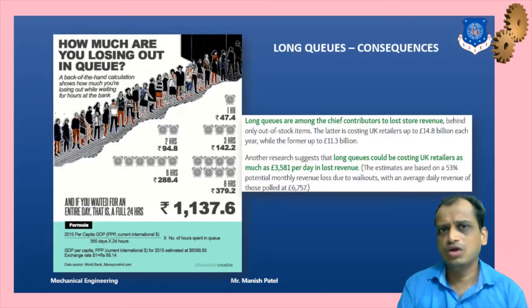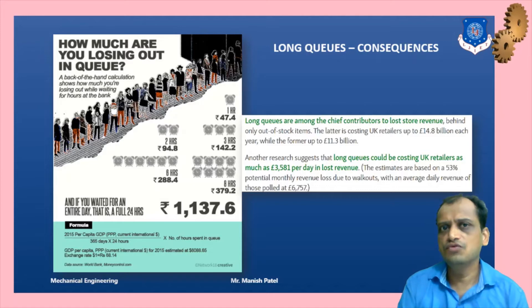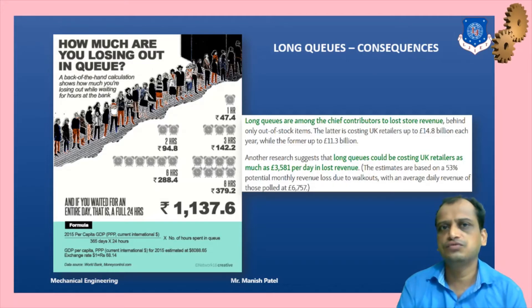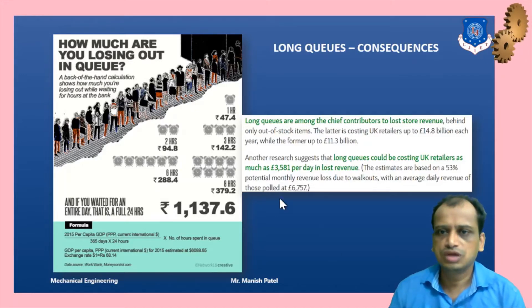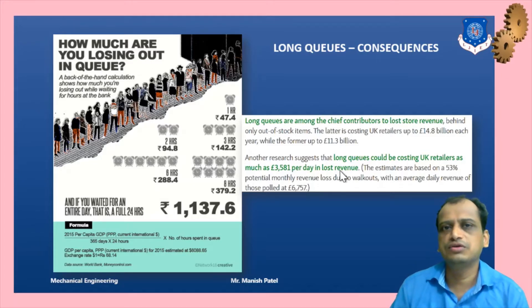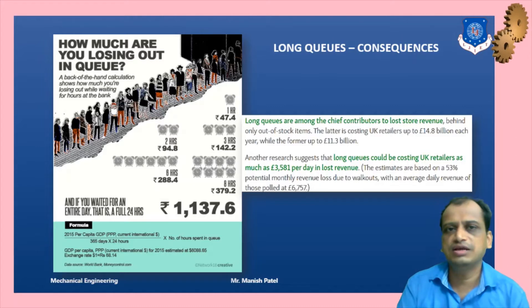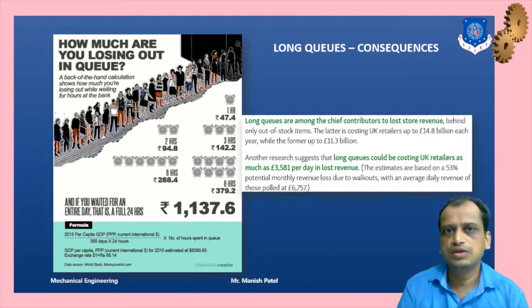What are the economic consequences of queuing systems? From an Indian point of view, if you are standing in queues you are wasting around 1,137 rupees on average in one day. Standing and waiting in line to get service is a significant cost. In the UK, retailers lose thousands of pounds per day in revenues due to long queuing systems. That is why it is very important to learn about queuing systems and how to manage long queues, so you can manage customer service and customer goodwill.